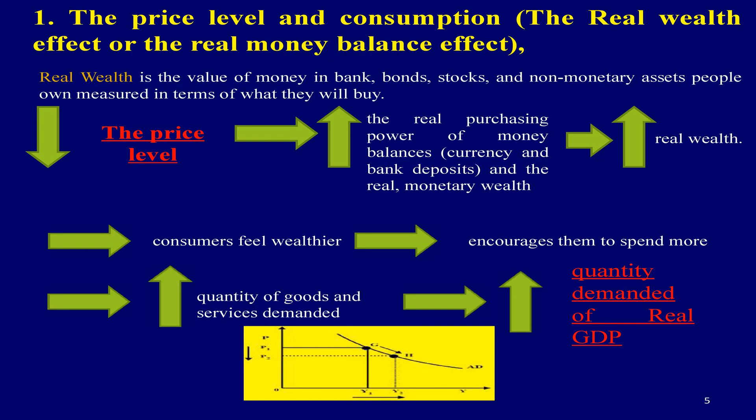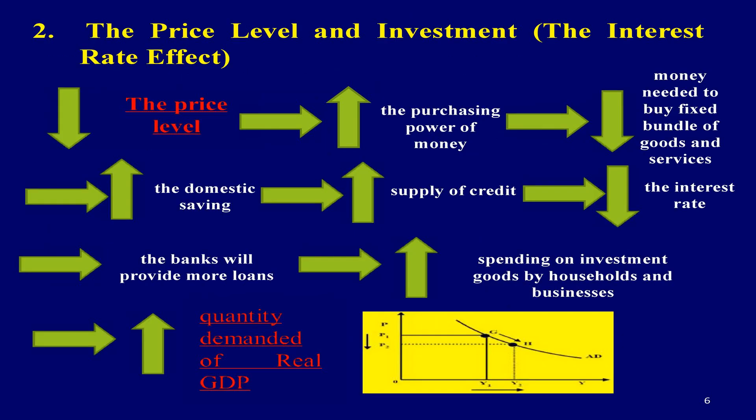The real wealth effect, or real money balance effect: real wealth is the value of money in banks, bonds, stocks, and non-monetary assets, measured in terms of what they will buy. As the price level decreases, the real purchasing power of money balances — which are currency and bank deposits — will increase. As the real purchasing power of money balances increases, real monetary wealth will increase. Therefore, if real wealth increases, consumers feel wealthier, hence consumers will spend more. The increase in consumer spending means a larger quantity of goods and services demanded.